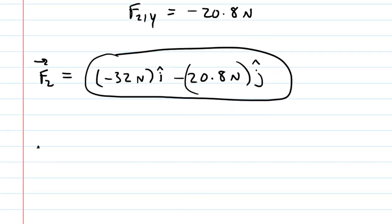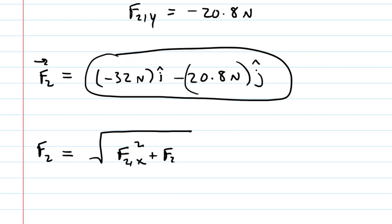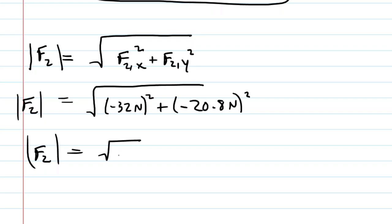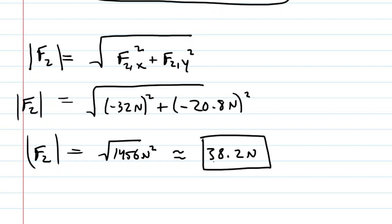For part b, we want the magnitude of F2. The magnitude is simply the square root of the x component squared plus the y component squared — an application of the Pythagorean theorem. Plugging in the components, we get the square root of 1456 newtons squared, and when you take the square root you get approximately 38.2 newtons. That is the correct answer for the magnitude of F2.